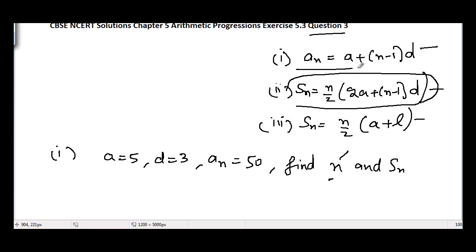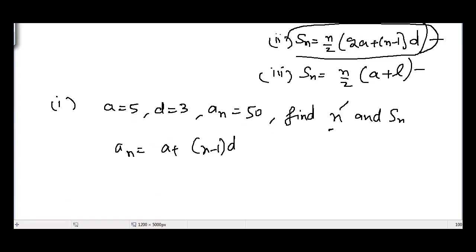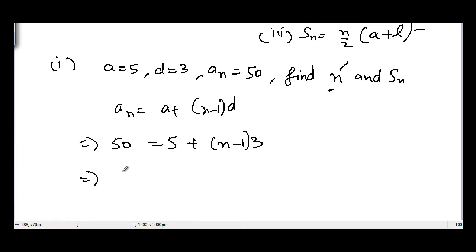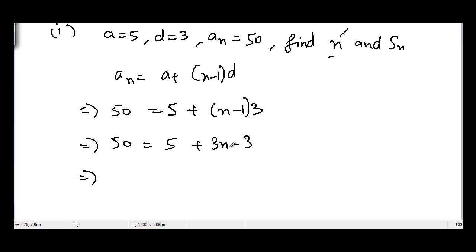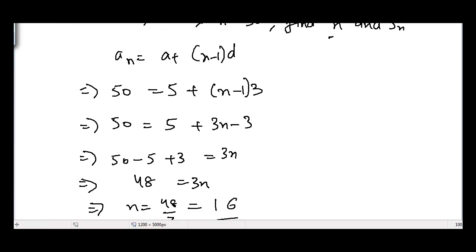We can find the value of n using the formula a_n equals a plus (n minus 1) times d. Putting a_n equal to 50, a equal to 5, and d equal to 3, and solving: 50 equals 5 plus 3n minus 3, which gives 3n equals 48, so n equals 48 divided by 3, which equals 16.